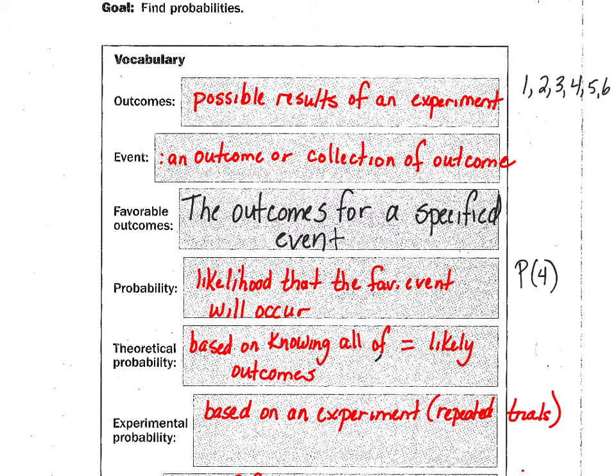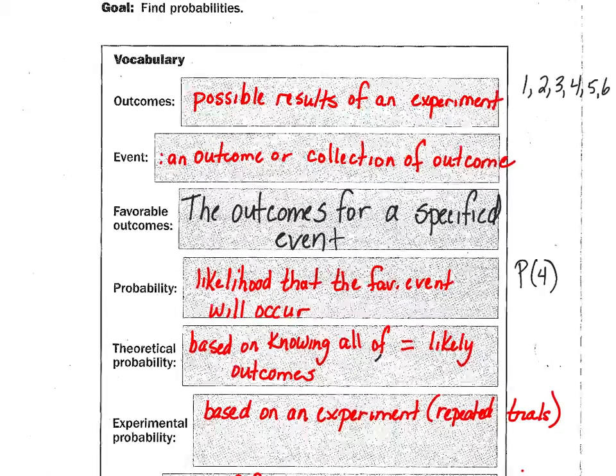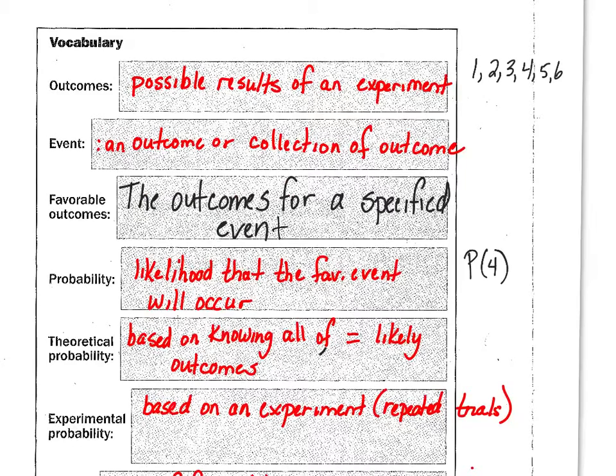So the probability is the likelihood that the favorable event will occur. We always write these right now. You will get to writing them as decimals as well. So what's the probability you roll a four? One out of six, right? There's one favorable outcome on that die out of six total.